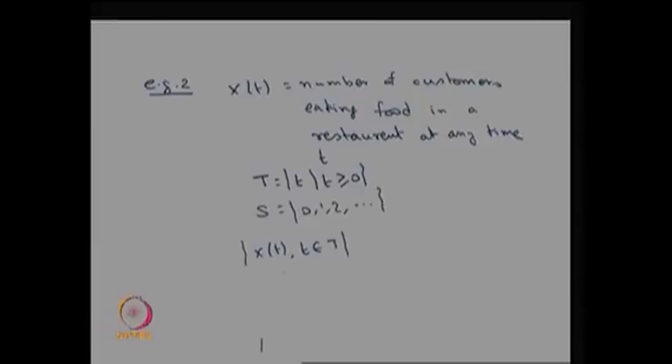This is a very typical example. The state space S could be countably finite or countably infinite. Now let us see the third type: the discrete-time, continuous-state stochastic process.